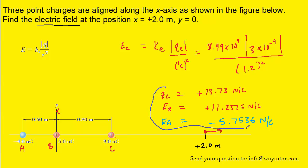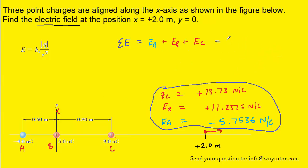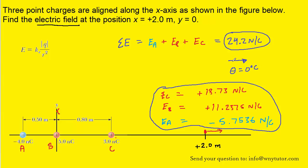All of these electric field vectors are pointing along the x-direction, so to get the grand total, all we have to do is sum them. When you add them all together, you should get approximately positive 24.2 newtons per coulomb. The fact that it came out as a positive result means that the net electric field at this point is pointing to the right in the positive x-direction. Depending on how your professor or homework system wants you to submit the answer, you could say to the right, along the positive x-axis, east, or an angle of zero degrees — but all of those ways mean the total electric field is aimed towards the right with a value of 24.2 newtons per coulomb.